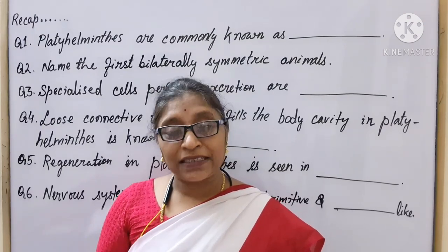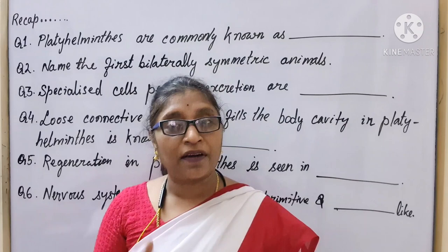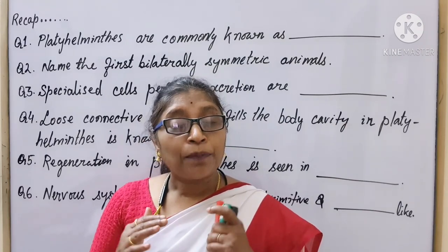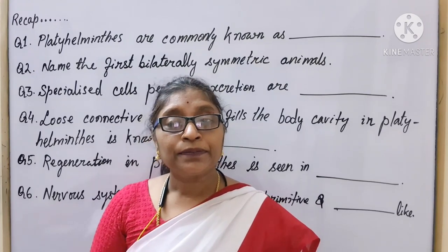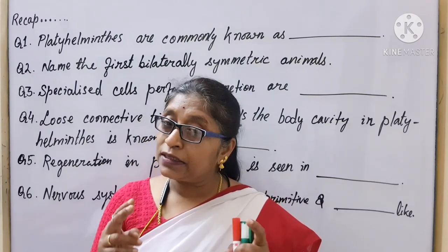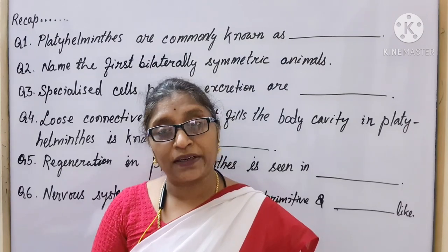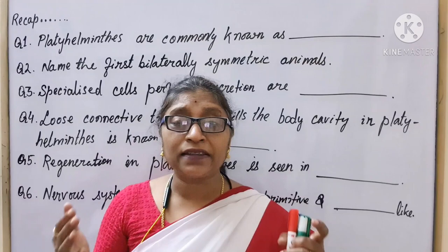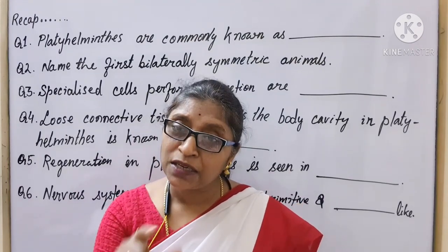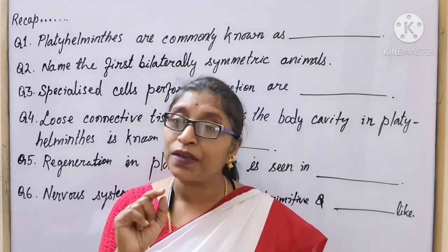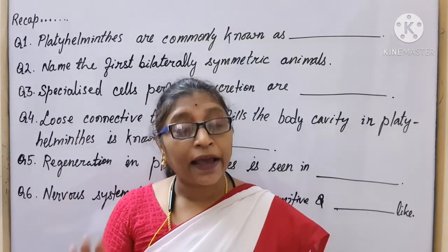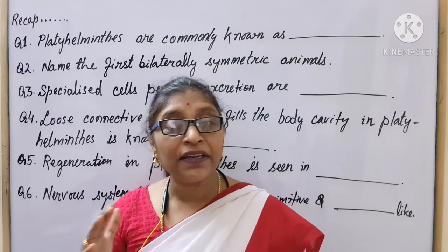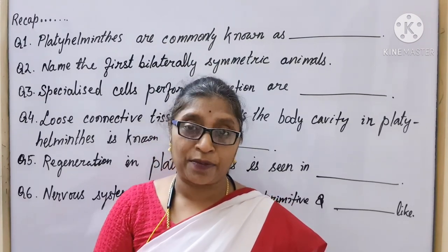These animals exhibit the organ level of organization, blind sac body plan, bilateral symmetry, and these are triploblastic and acoelomate. Why do these exhibit the blind sac body plan? Because the digestive system is present, mouth is present but anus is absent. These are the first bilaterally symmetrical and triploblastic animals.